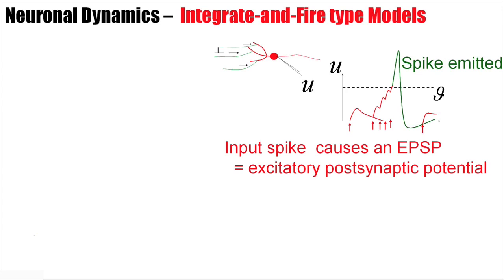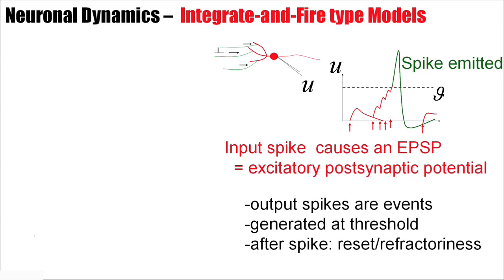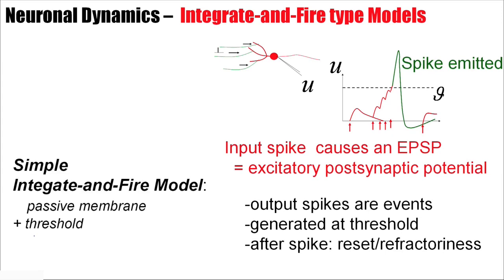Now, a simple integrate-and-fire model is our model of a passive membrane combined with a threshold. So we take our model of a passive membrane, which means a linear differential equation, combine it with a threshold, and then we have the leaky integrate-and-fire model.